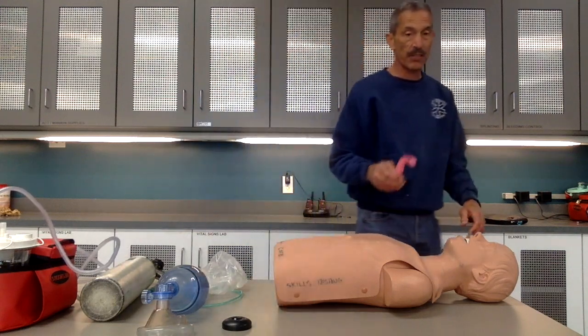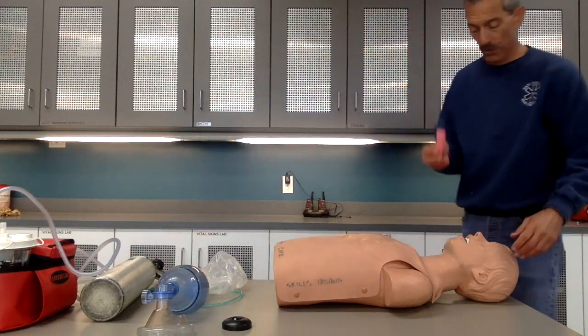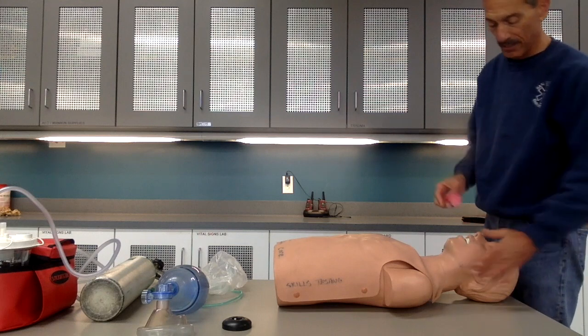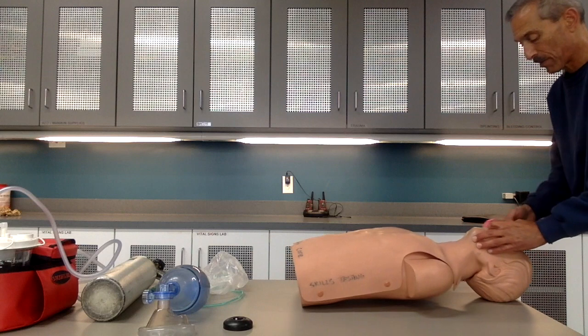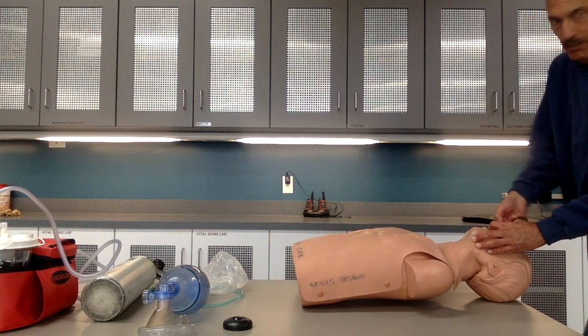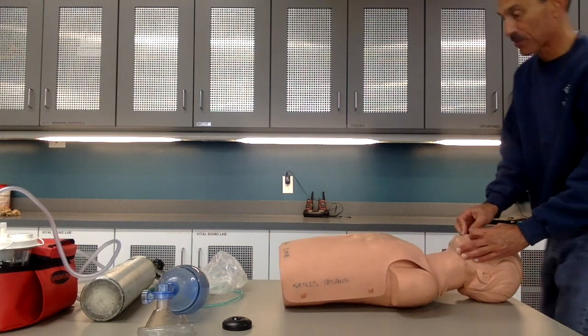I'm going to protect the airway by inserting an oral pharyngeal airway. I'm going to measure from the front of the teeth to the angle of the jaw. I'm going to open the airway, head tilt, chin lift. I'm going to insert the device upside down, 180 degrees, rotate it twice. Patient accepts the airway.